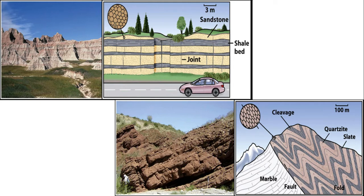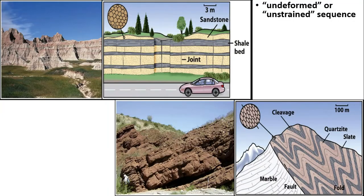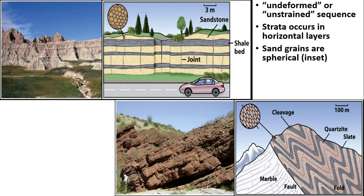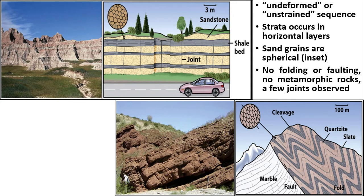Let's compare and contrast these two pictures. The first picture we can say is undeformed or unstrained because the lines are organized. The strata occurs in horizontal layers, the sand grains are spherical as you can see in the circle, and there's no folding or faulting. There's also no metamorphic rocks, but there are a few joints observed.